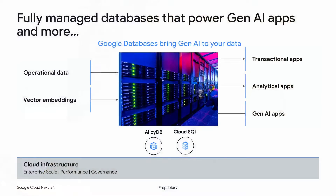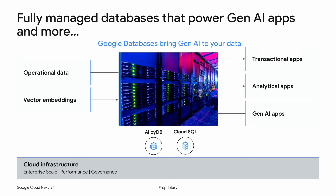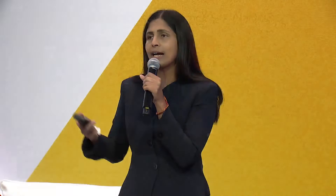GenAI application developers can easily stitch their applications with databases and pull in knowledge from these data sources. This means we are bringing AI closer to data. We now offer vector support across all our databases — whether you're using AlloyDB, Cloud SQL, or Spanner — you can generate embeddings on your operational data using SQL and store those embeddings right in the database. You can also do vector search and semantic similarity search in your database, meaning zero data movement, making it much easier to build context-aware applications.